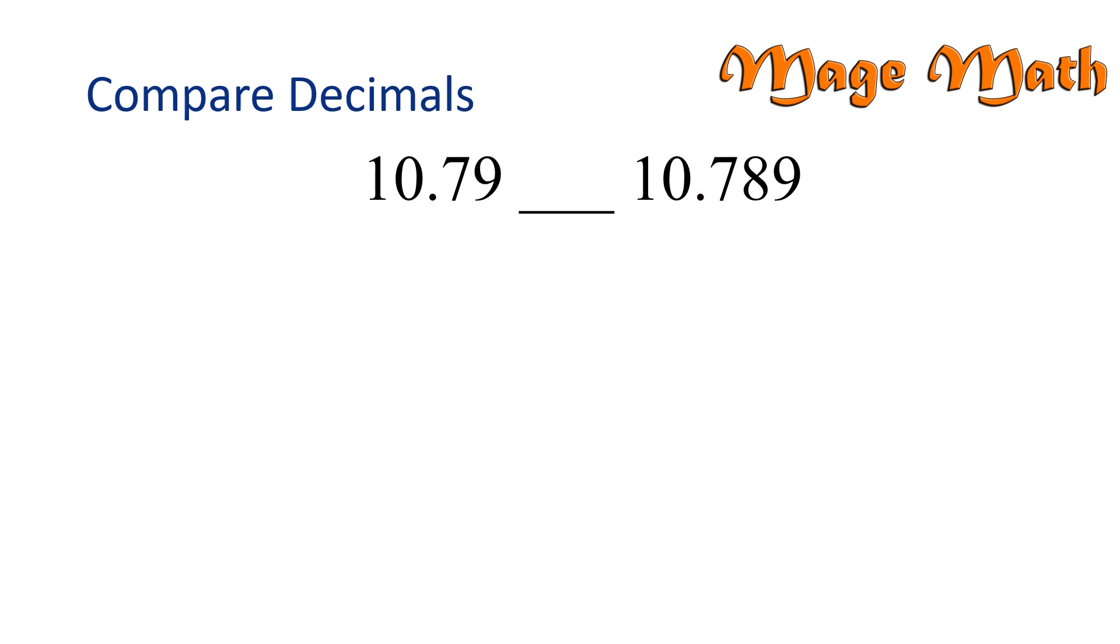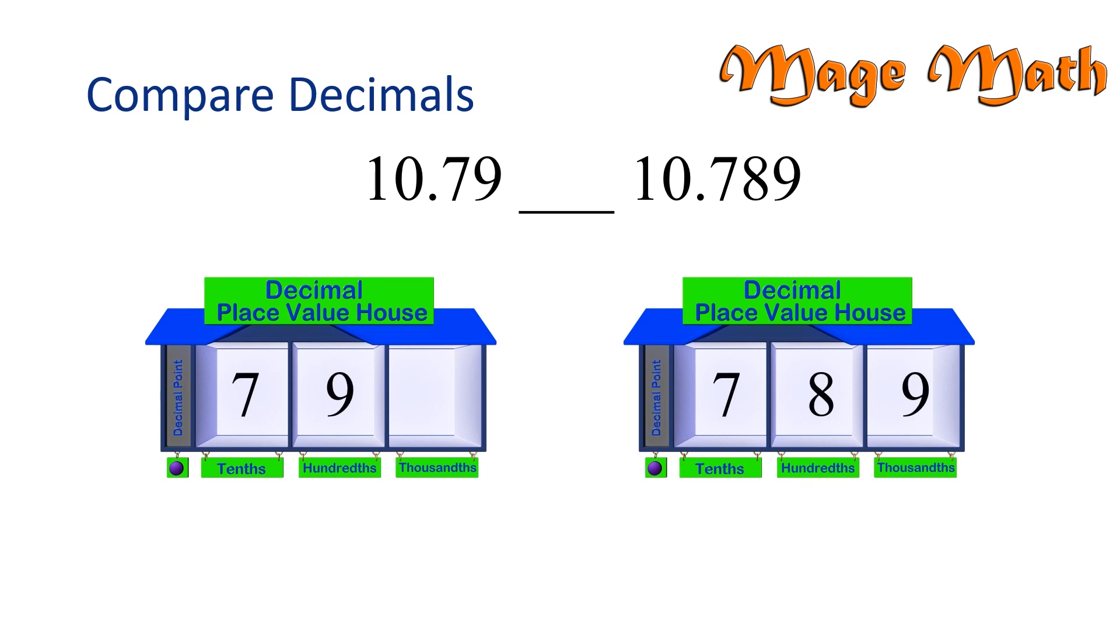Let's put our numbers into place value houses. When we compare decimals, they need to have the same number of place values. So let's write 79 hundredths as 790 thousandths by adding a zero to the end. Remember that decimals are just another way to write fractions. 0.790 is the same as 790 thousandths and 0.789 is the same as 789 thousandths.